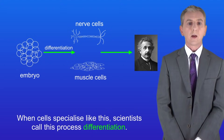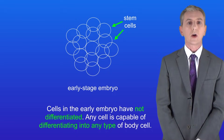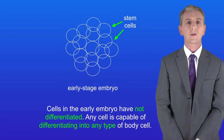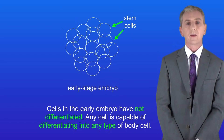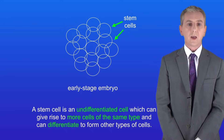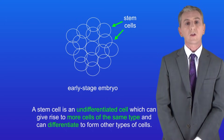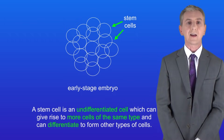Over time these cells form the adult organism. If we go back to the early stage embryo, those cells have not yet differentiated — any one of them is capable of differentiating into any type of body cell. Scientists call these embryonic stem cells. A stem cell is an undifferentiated cell which can give rise to more cells of the same type and can differentiate to form other types of cells.